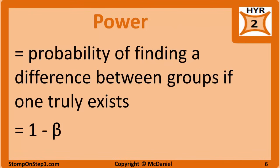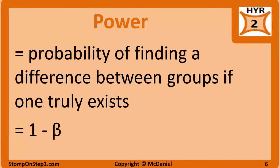Power is the probability of finding a difference between groups if one truly exists. It is the percentage chance that you will be able to reject the null hypothesis if it is really false. Power can also be thought of as the probability of not making a type 2 error. In equation form, power equals 1 minus beta. It is good for a study to have high power — a cutoff for differentiating high from low power would be roughly 0.8 or 80%. In other words, having a beta less than 20% for a given study is good.